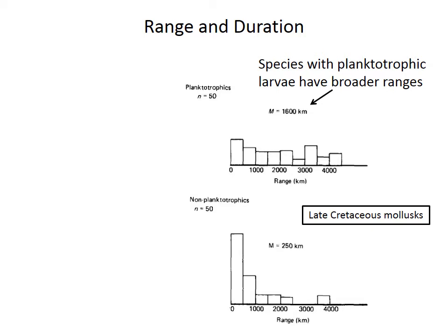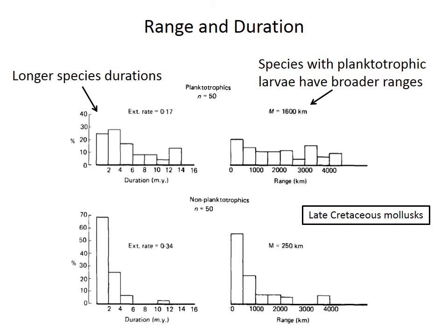In this example from late Cretaceous molluscs, species with planktotrophic larvae have larger geographic ranges on average — 1,600 kilometers compared to only 250 kilometers for the lecithotrophic species. Because of those range differences, planktotrophic species also have longer geological durations. As you can see from the lower left panel, the non-planktotrophic, or lecithotrophic species, rarely persist longer than 2 million years in the geological record, and they have extinction rates that are twice as high on average as the planktotrophic species.